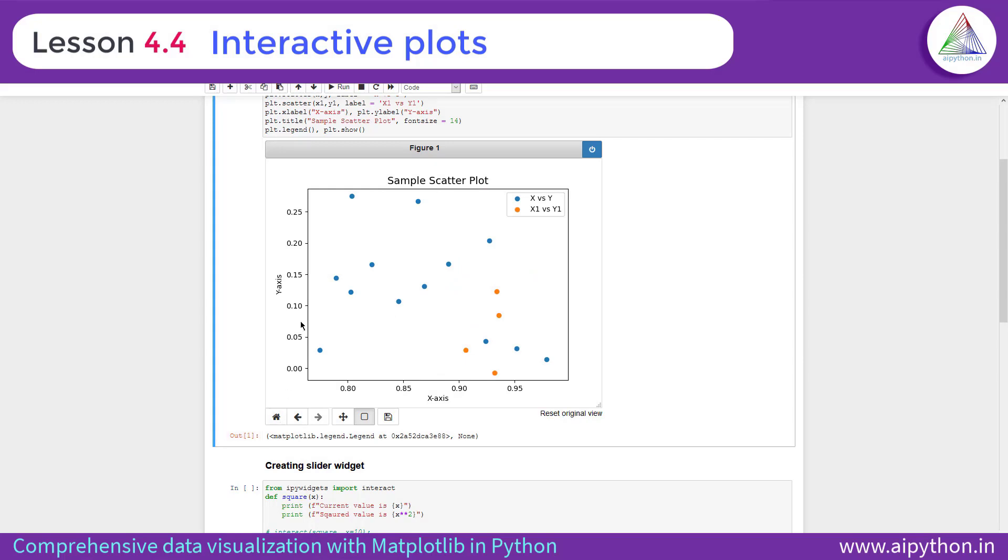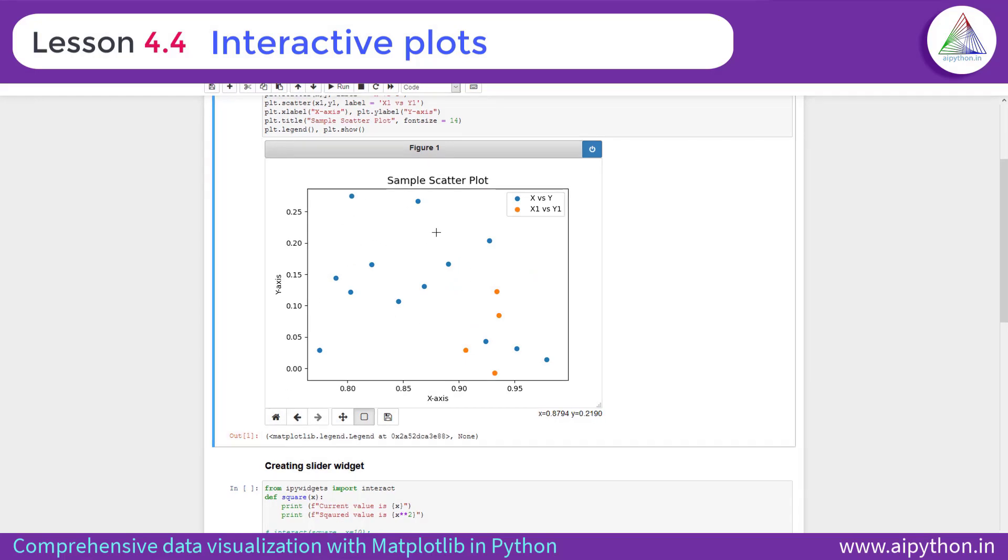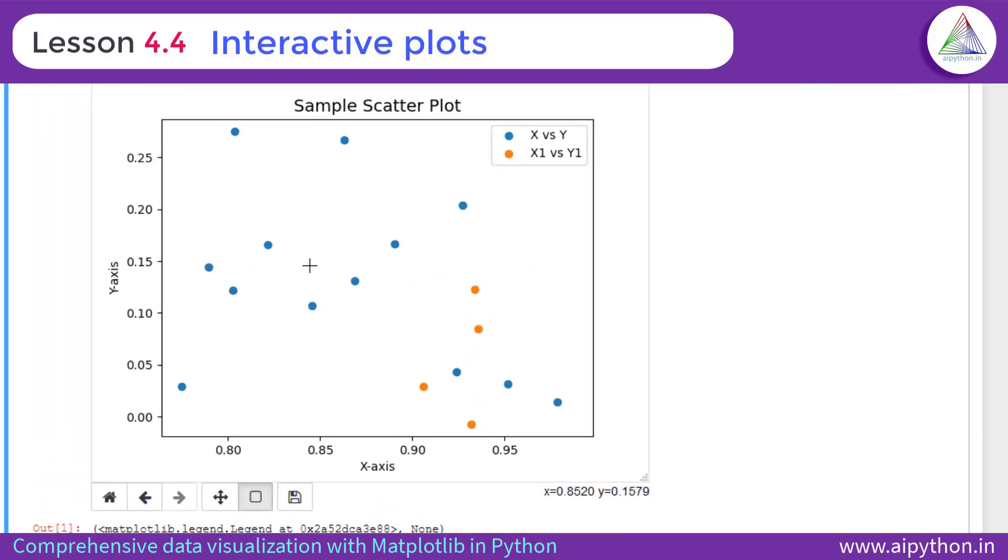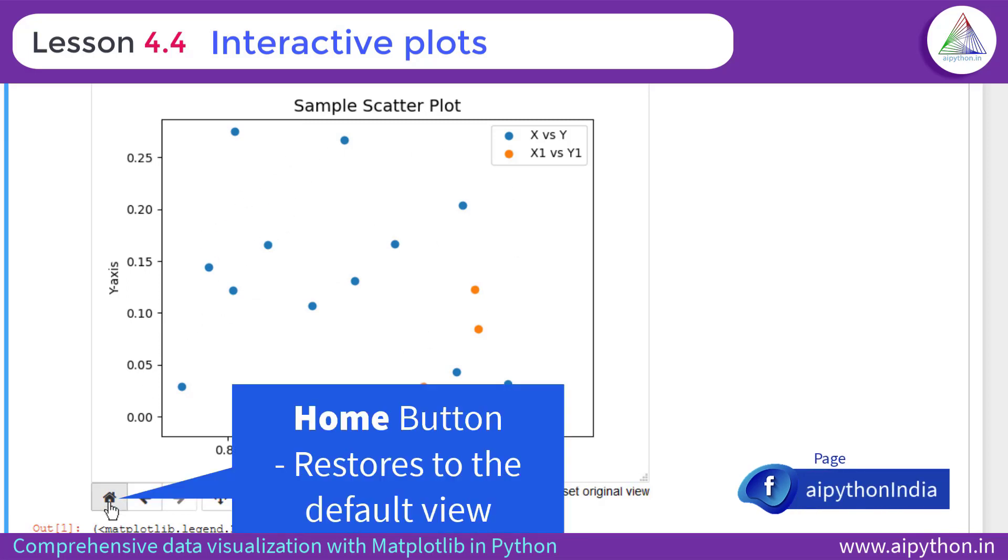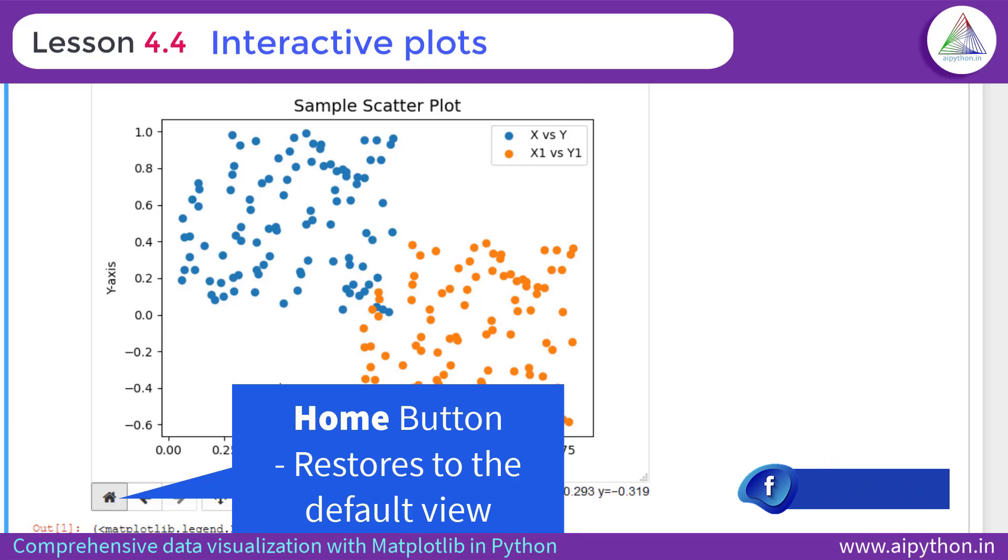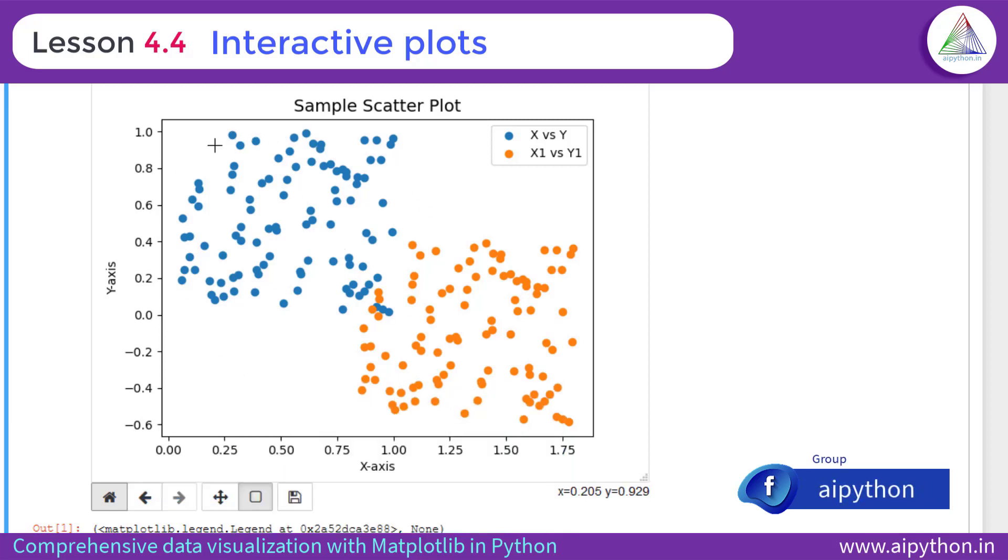Now, this home button will make the default or whatever the first instance of the image that was generated or first instance of the graph that was generated. It will move the view of the graph to that particular position. If I click on home button, this is the previous or the first version of the graph that we have seen.